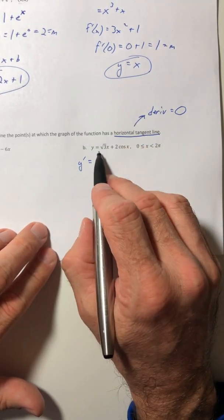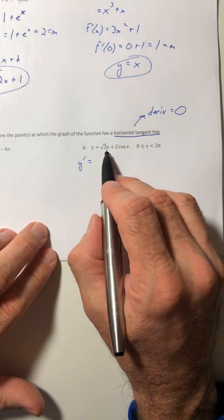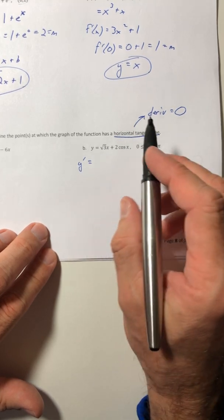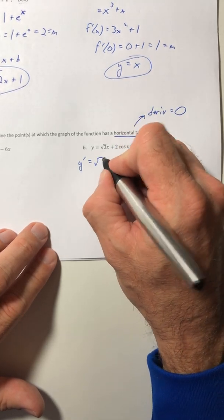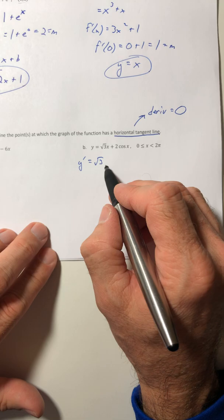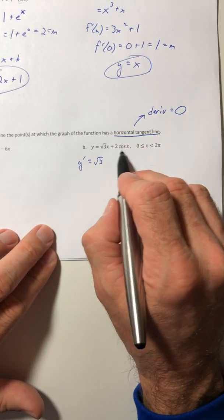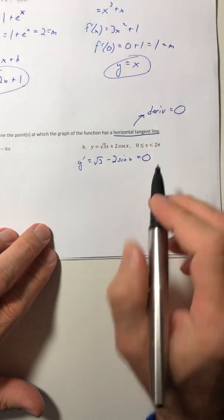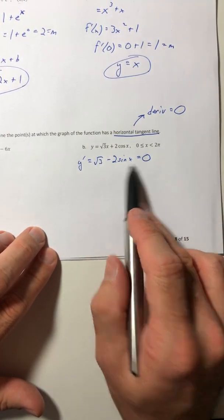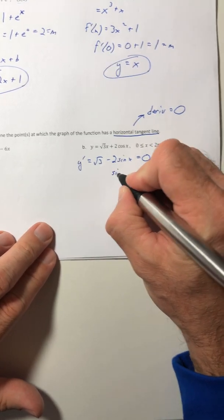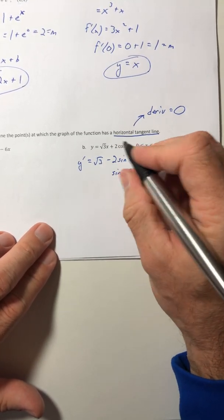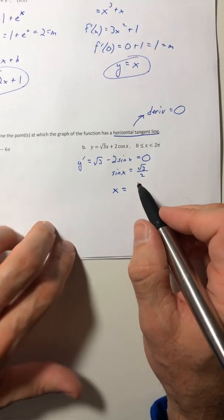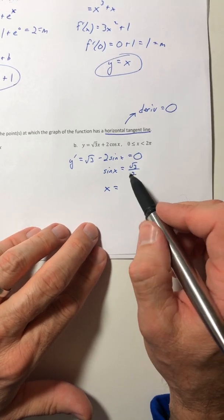So we're going to find the derivative of this. For root 3 times x, the x is not inside the radical. So the derivative of root 3 times x is just root 3. The derivative of 2 cosine of x is negative 2 sine of x. And we're going to set it equal to zero, and then we're going to solve this equation for x. So I get the sine by itself.